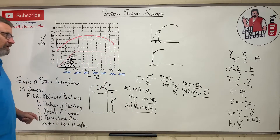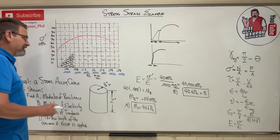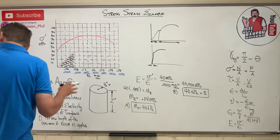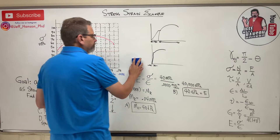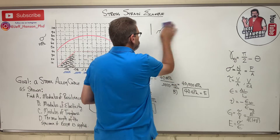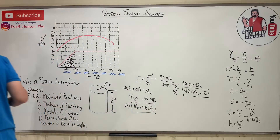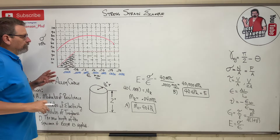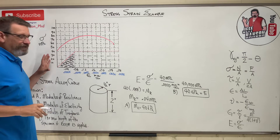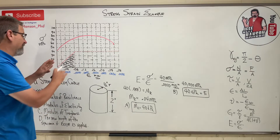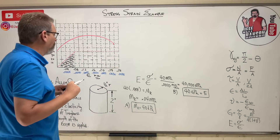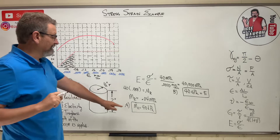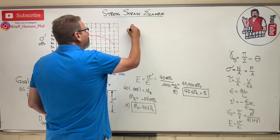Part C: the modulus of toughness. The modulus of toughness is the area under the entire curve. The area under the entire curve requires two approaches — we need the area of the bottom piece and then the area of the top piece, so let's do it in two parts.